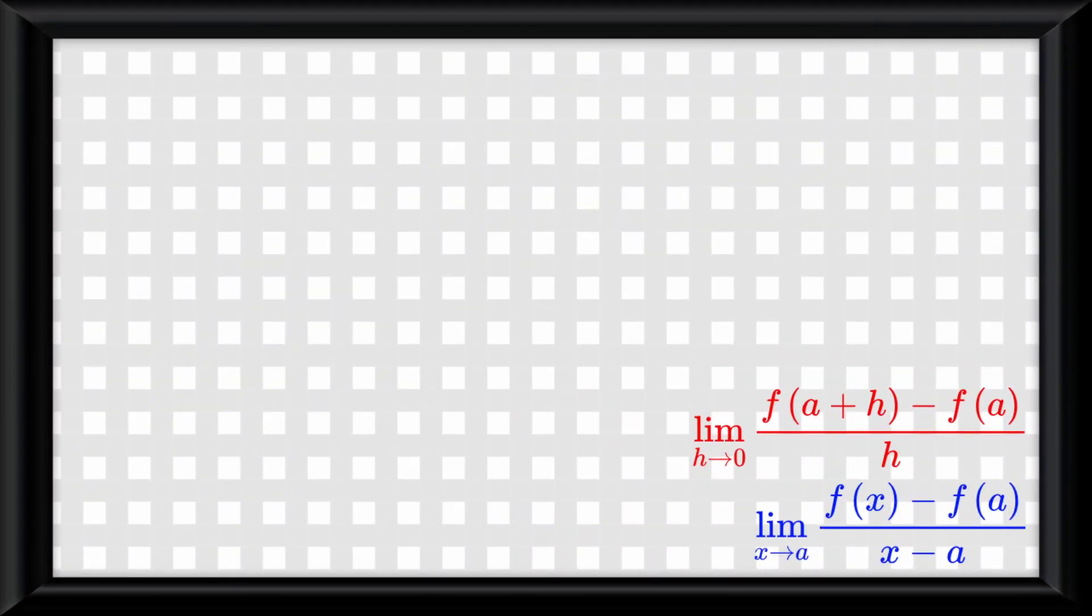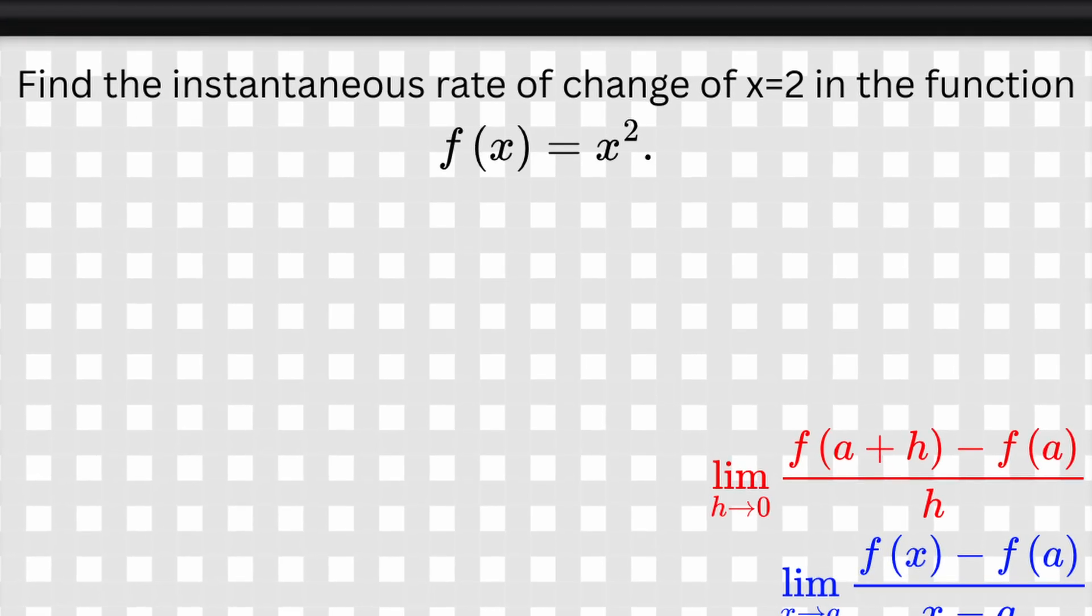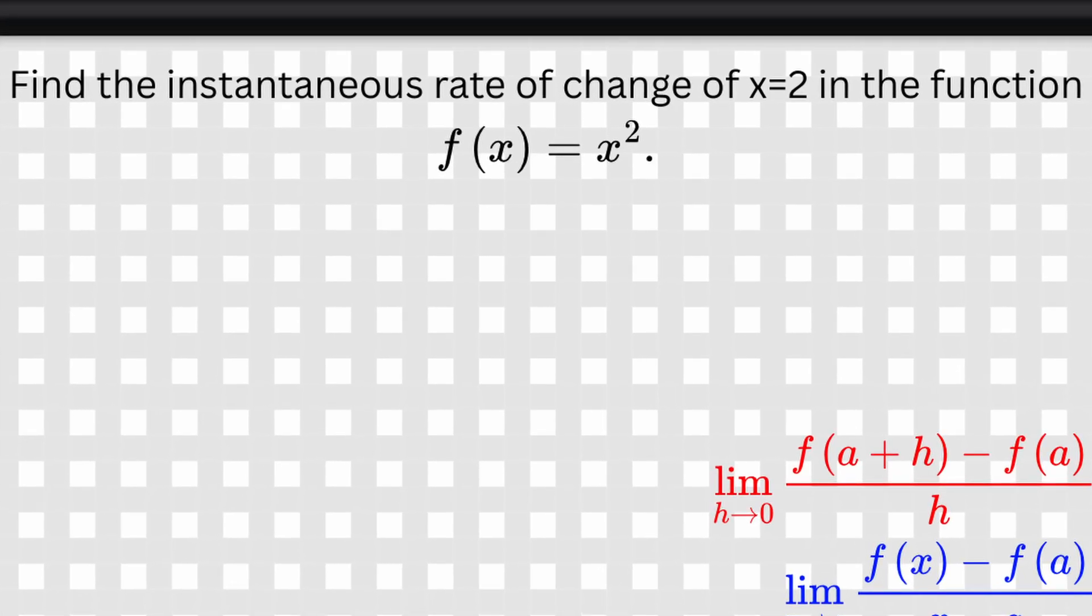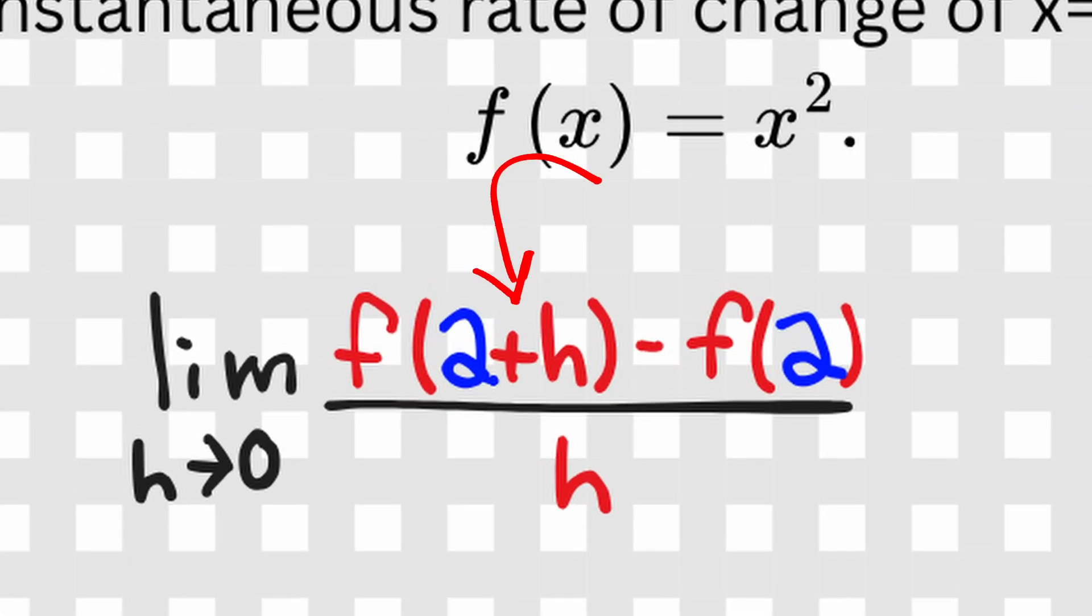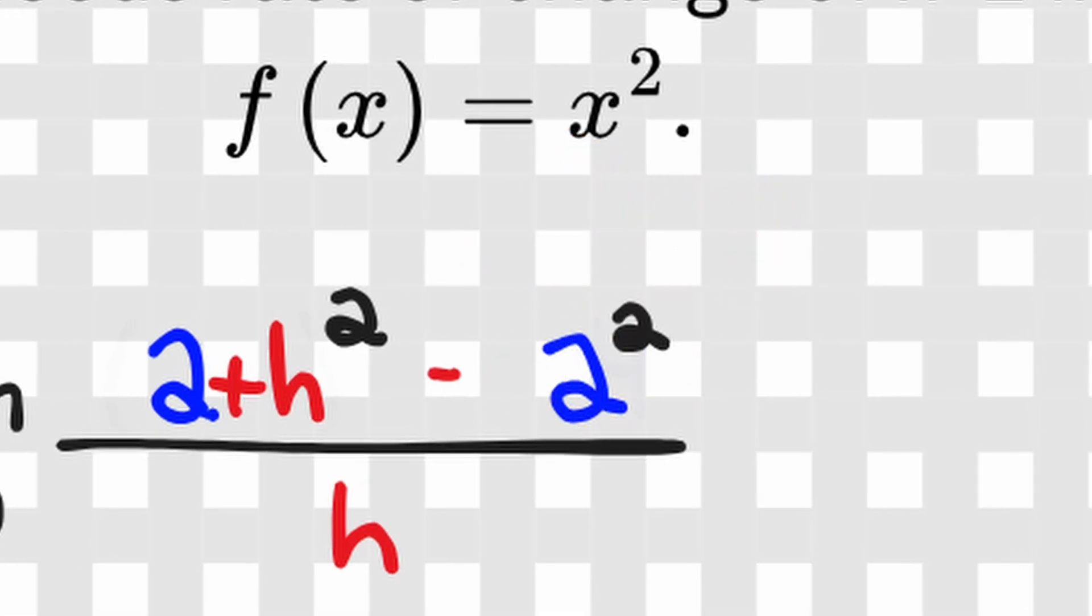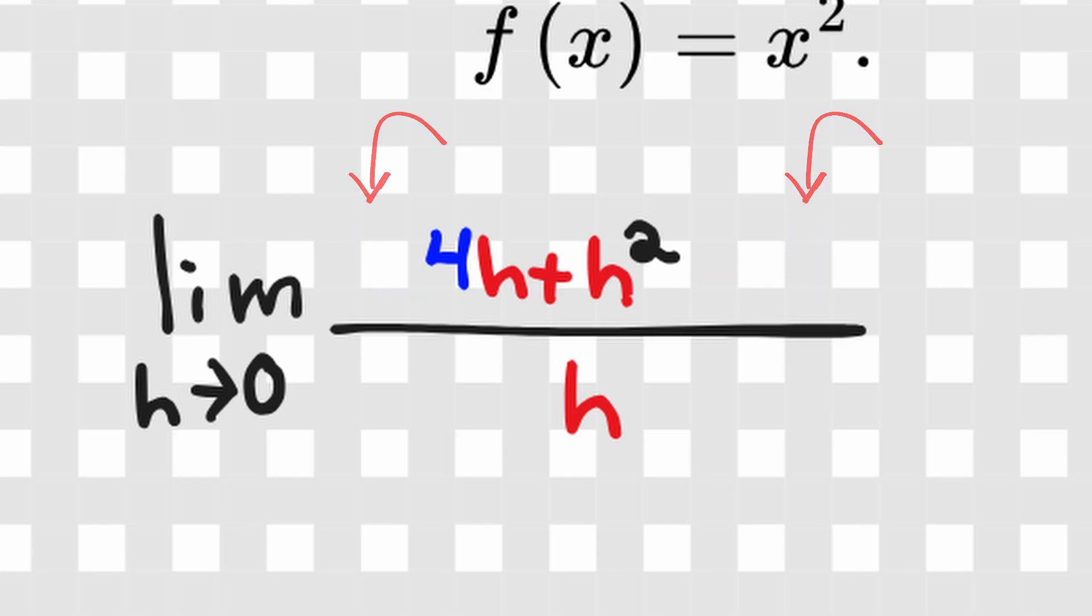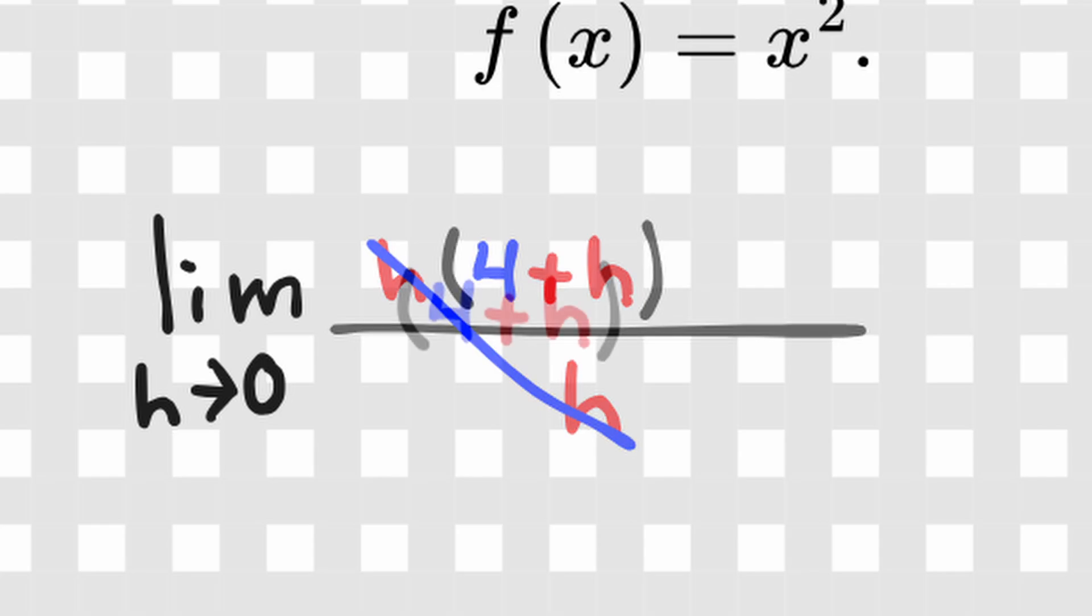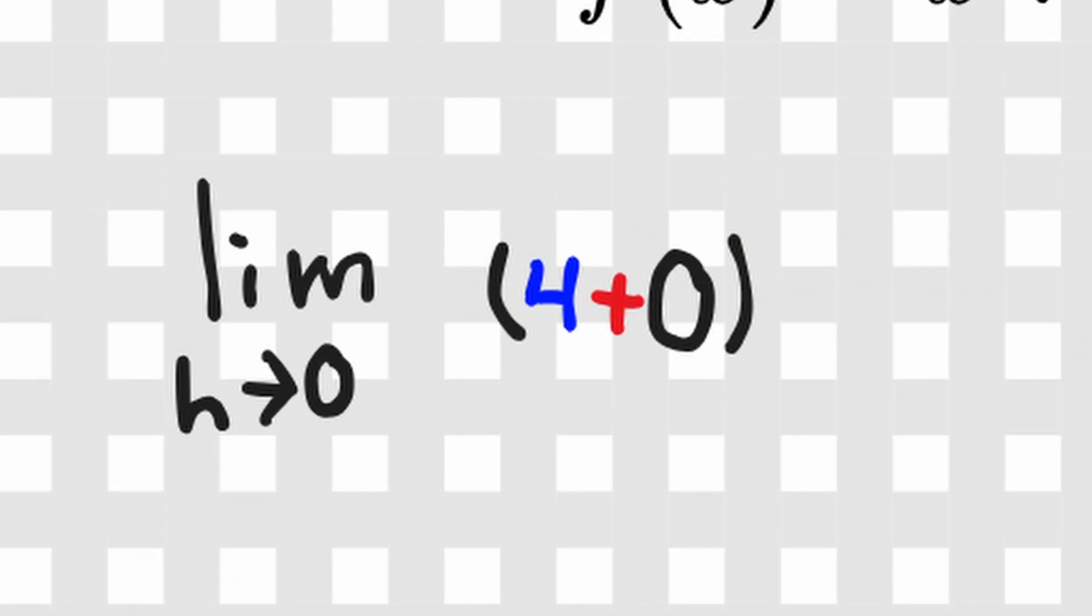So let's do an example of using these formulas. This one. Find the instantaneous rate of change of x equals 2 in the function f of x equals x squared. Let's start with the first formula. First we plug in 2 for A. Now we need to plug in 2 plus H into the original function, so we get 2 plus H squared. And we have to plug in 2 into the original function, so we get 2 squared. So now let's simplify the numerator by first foiling. Then these two 4s would cancel out. Now we can factor an H out of our numerator. Then we cancel H out of the denominator. And look at that. Now we can do direct substitution to find the limit. So 4 plus 0 is equal to 4.